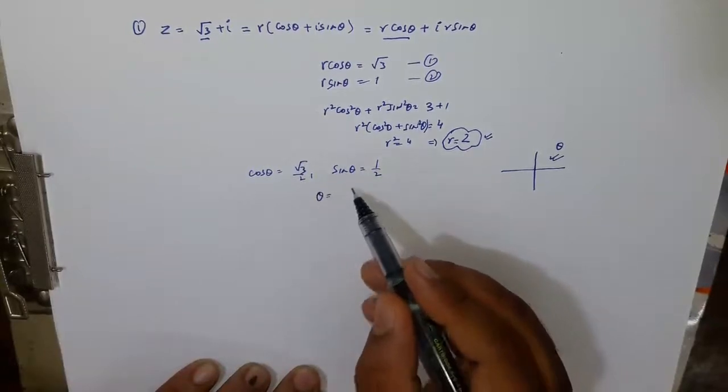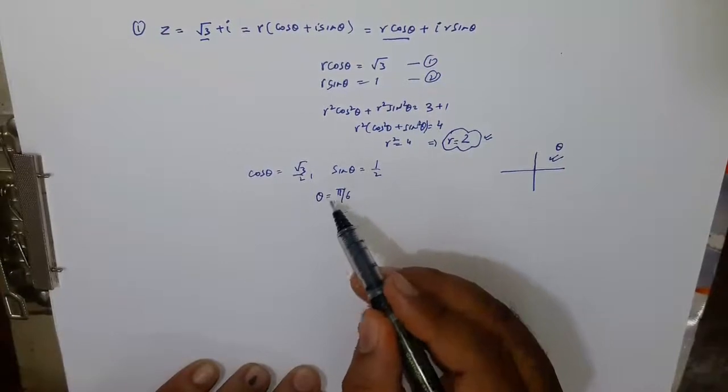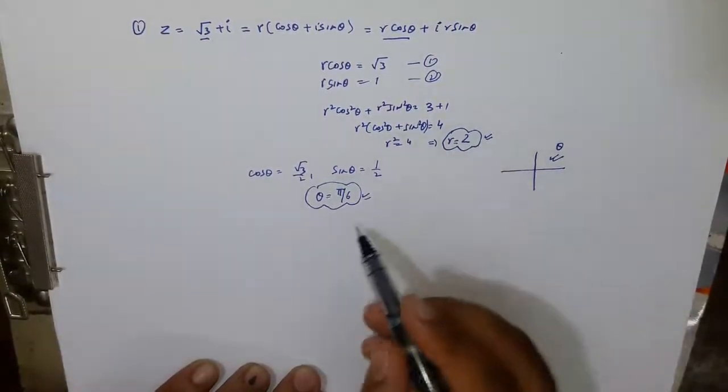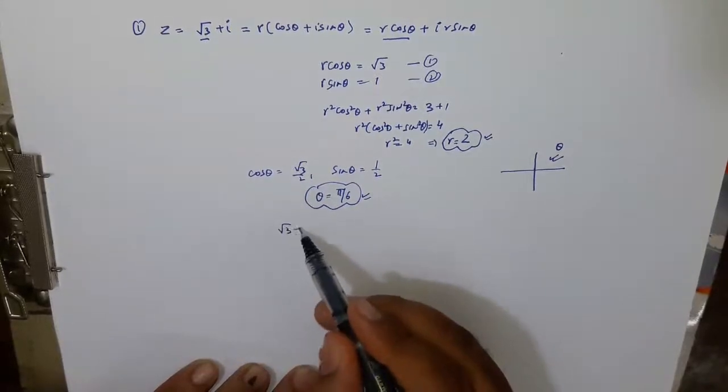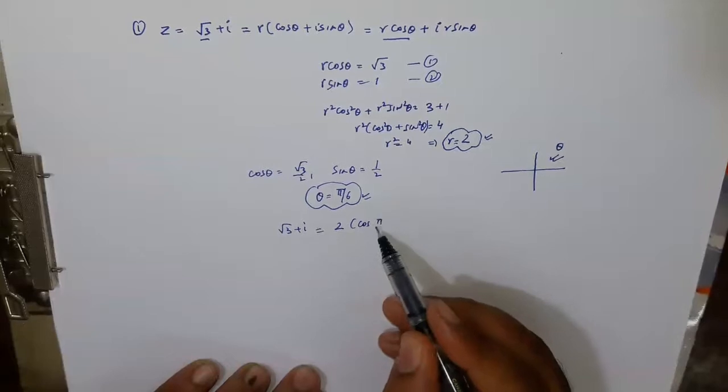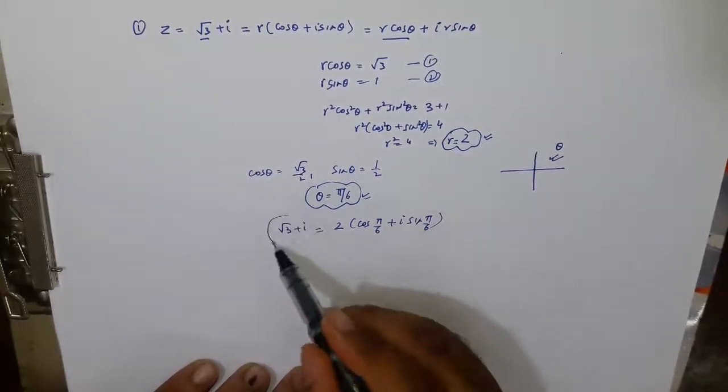So we have the value of theta. We have the value of r. So iski polar form directly aa jayegi, root 3 plus iota ki polar form aa jayegi 2 cos pi by 6 plus iota sin pi by 6. So in this way we can find out the polar form of any complex number.